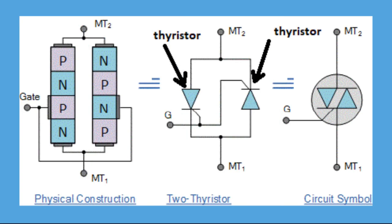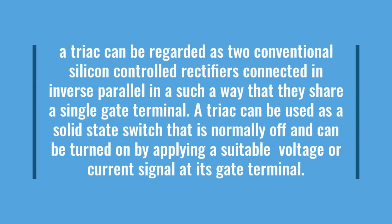A TRIAC can be regarded as two conventional silicon-controlled rectifiers connected in inverse parallel in such a way that they share a single gate terminal. A TRIAC can be used as a solid-state switch that is normally off and can be turned on by applying a suitable voltage or current signal at its gate terminal.